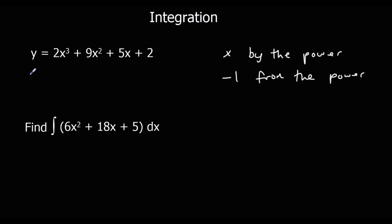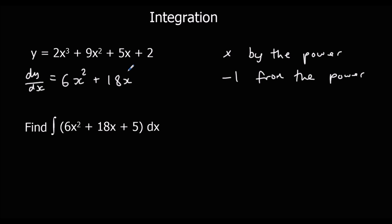So let's differentiate this. dy/dx is going to be: we times by the power — 3 times 2 is 6 — and take 1 off the power, so 3 goes down to 2. We times by the power again — 2 times 9 is 18 — and take 1 off the power, so 2 minus 1 is 1. We don't have to write the power of 1; x by itself means x to the power of 1.